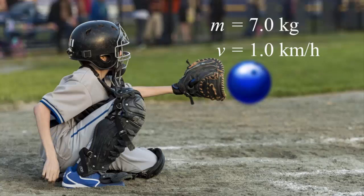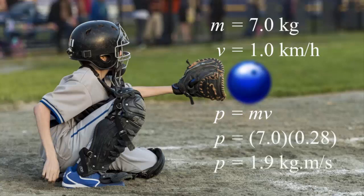Now consider that the bowling ball is only moving at 1 kilometer per hour. Then its momentum is about the same as that of the baseball moving at 50 kilometers per hour. In these examples, they show that both the object's mass and its velocity is important in determining momentum.